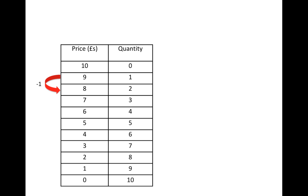Suppose we are decreasing the price from 9 to 8, that means the price is being lowered by one monetary unit. As a consequence, the demand is increasing by one unit. Now suppose that we are reducing the price from 2 to 1 — as before, the price is being lowered by one monetary unit and the demand is increasing by one unit.